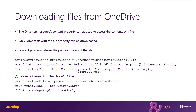The drive item resource has a property called content that can be used to get access to the file's data. Only drive items with the file property can be downloaded. The content property returns the primary stream of the file. For example, to download a specific file using the Microsoft Graph .NET SDK, you would use the code shown here on the slide.